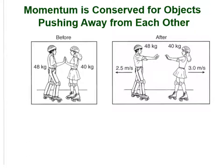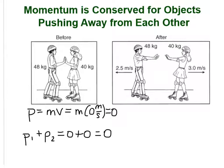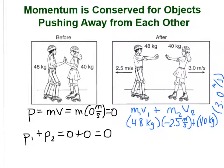Now let's take a look at what happens to momentum when objects push away from each other. We know that when both skaters are standing facing each other and they're still, they have zero momentum, so the total for both skaters is zero as well. When the skaters push away from each other, they're going to have equal momentum but in the opposite direction, so their total momentum is still going to be zero. We can write the velocity for the first skater as negative 2.5 because he's going this direction, and the velocity for the second skater will be positive 3.0 because she is moving in that direction. So our total momentum will be zero. Momentum is conserved for objects pushing away from each other simply because the momentum is equal but in opposite directions.